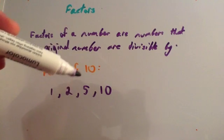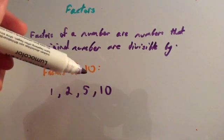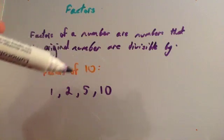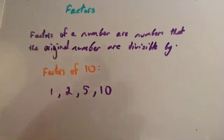1, it's divisible by 2, it's divisible by 5, and it's divisible by 10. So whenever you divide 10 by 1, 2, 5, and 10 there are no remainders.